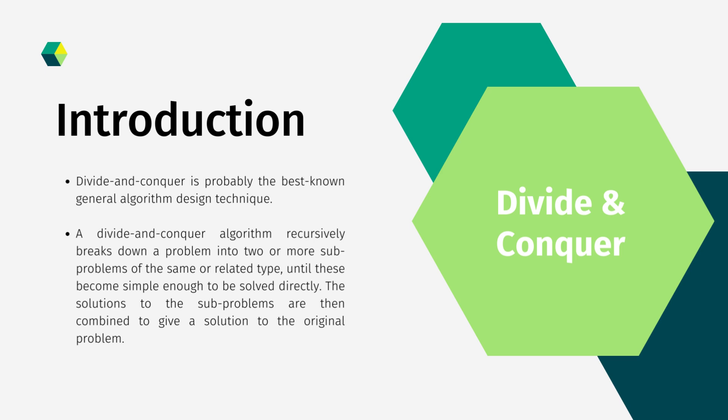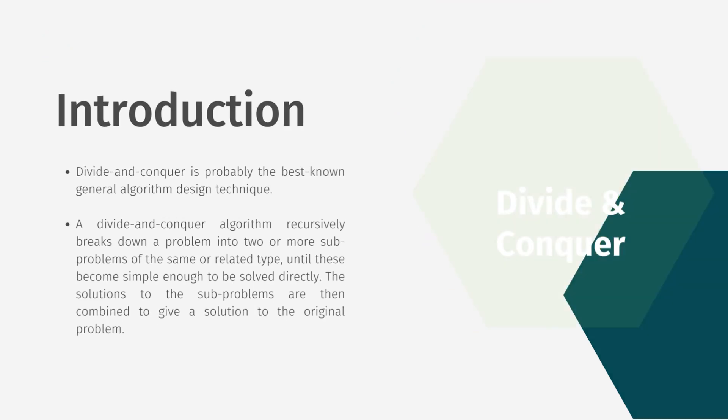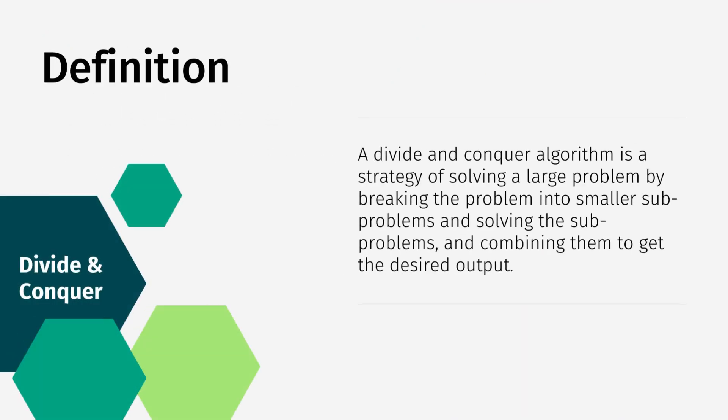The divide and conquer algorithm is defined as a strategy of solving a larger problem by breaking the problem into smaller sub-problems and combining them to get the desired output. In divide and conquer, a problem is divided into smaller problems, then the smaller problems are solved independently, and finally the solutions of the smaller problems are combined into a solution for the whole problem.